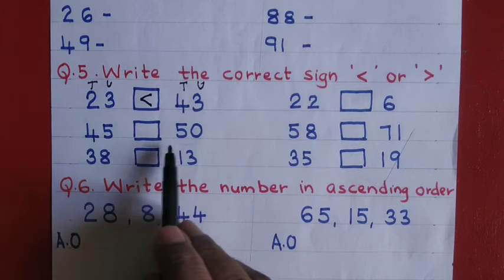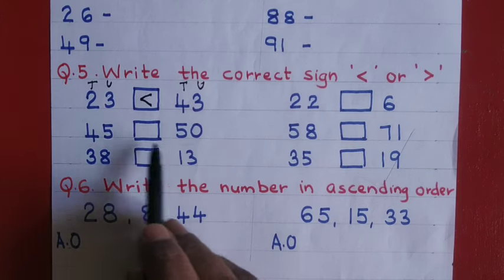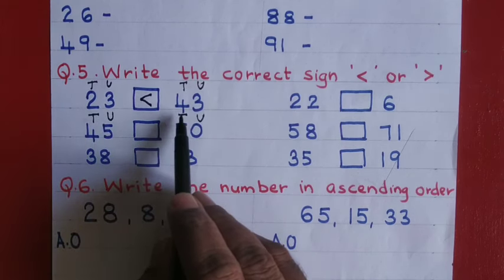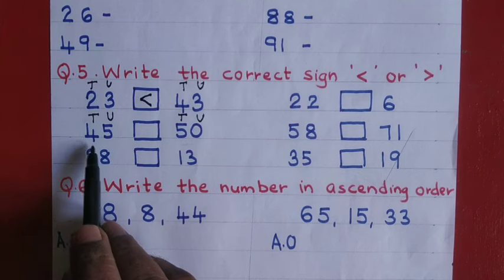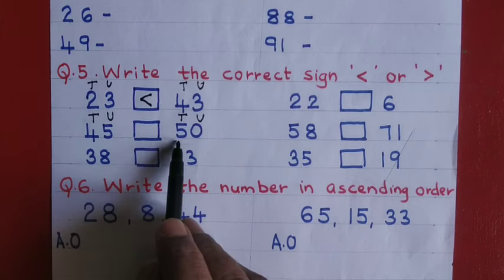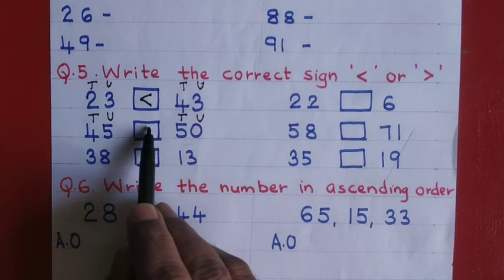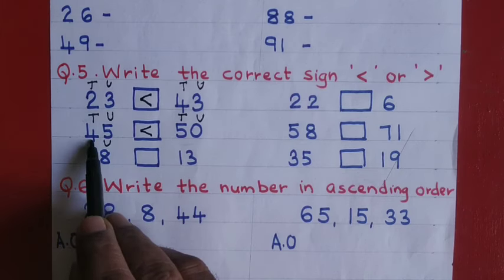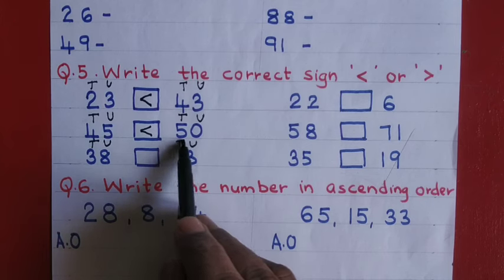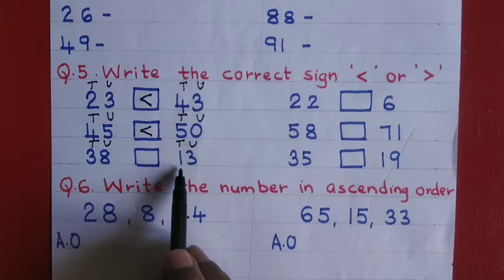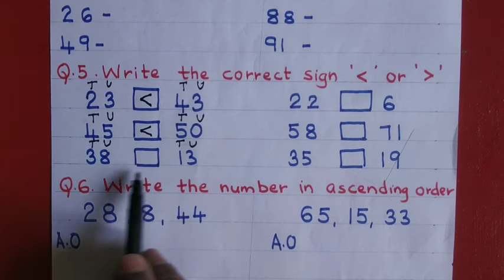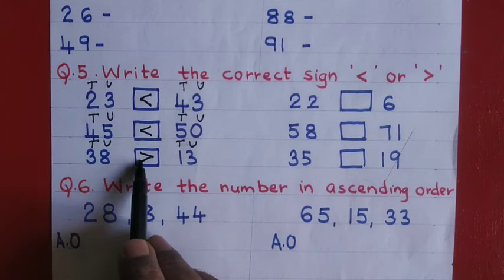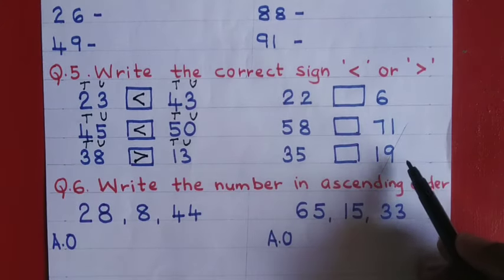Forty five compared to fifty: in forty five you have four tens, in fifty you have five tens, therefore forty five is less than fifty. Thirty eight and thirteen: in thirty eight you have three tens, in thirteen you have one ten. Three tens is greater than one ten, therefore thirty eight is greater than thirteen. The last one you have to try.